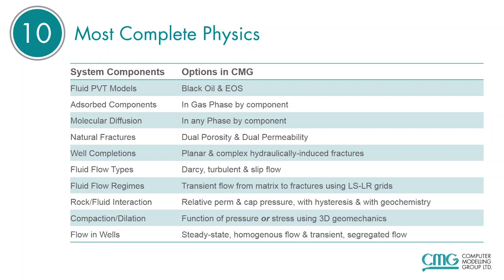Natural fractures in a dual porosity and dual permeability model. Well completions — planar and complex hydraulically induced fractures. Fluid flow types: Darcy, turbulent, and slip flow. Fluid flow regimes: transient flow from matrix to fractures using logarithmically spaced locally refined grids. Rock fluid interaction — relative permeability and cap pressure with hysteresis and with geochemistry. Compaction and dilation as a function of pressure or stress using 3D geomechanics. And finally, flow in wells: steady state, homogenous flow, transient, and segregated flow.